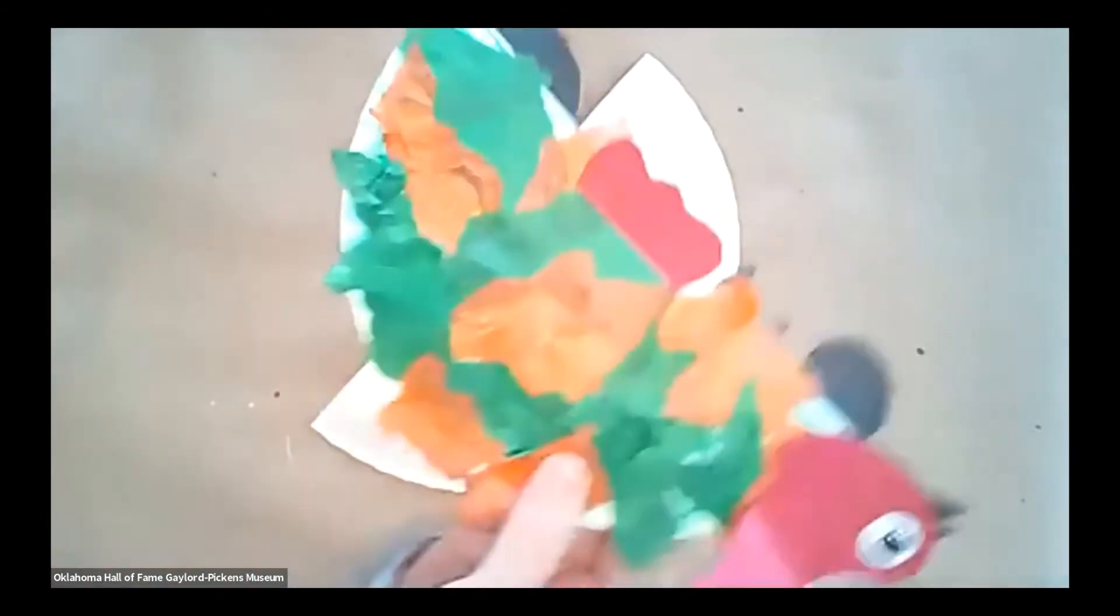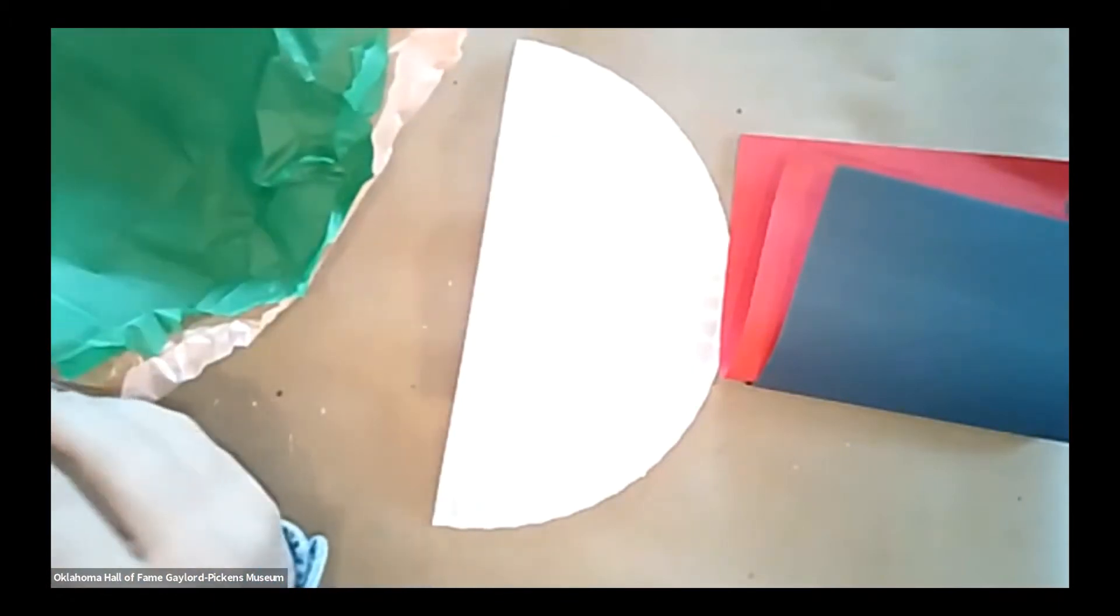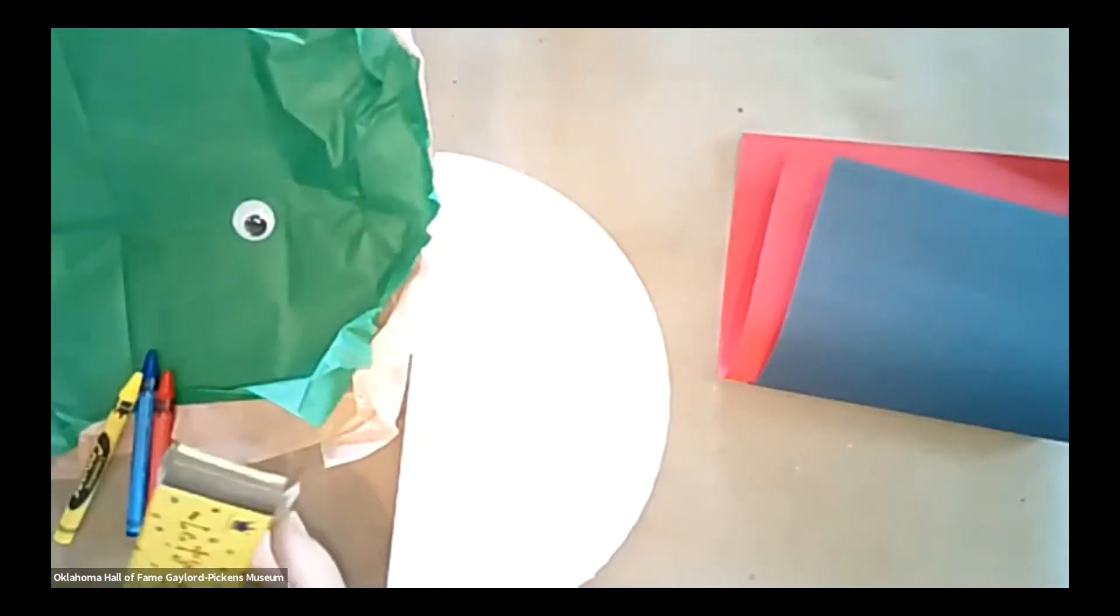And so we're going to go ahead and jump right into craft time now. And so our craft time today is going to be one of the deep sea creatures that were friends with Fang and Nugget. And so today we are going to be making our very own seahorse. And so today what we're going to need is we're going to need a paper plate. We're going to need a couple pieces of paper like I have right here. We're going to need two different pieces of tissue paper. And then we're going to need a googly eye.